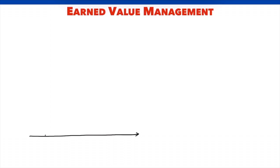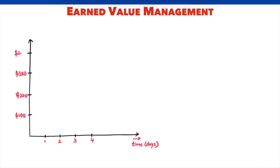We have a project with a planned duration of 4 days. The plan is to spend a total of $400 at a rate of $100 per day. This is a plot of planned value.